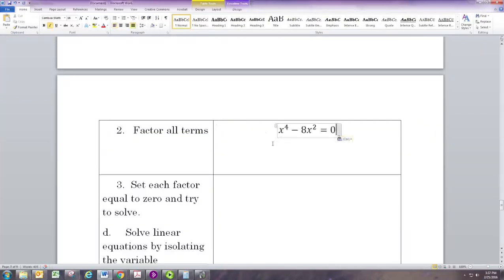Now we try to factor, and the common factor in both terms is x². If you were to divide x⁴ by x², you take away two of those and that would still have two left. If you were to divide negative 8x² by x², the x² are gone and it's just minus 8. So there's the factored form: x²(x² - 8) = 0.